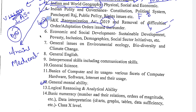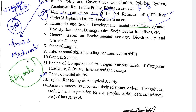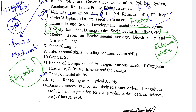Then comes Economic and Social Development. Here we cover Sustainable Development and our SDG goals — Sustainable Development Goals: how many goals there are and what the targets are. Then poverty, inclusion, demographics, social sector initiatives will be covered. This includes government schemes with important data. There is also a static portion covering poverty theories, definitions, and committees. The current affairs portion will also be covered here.